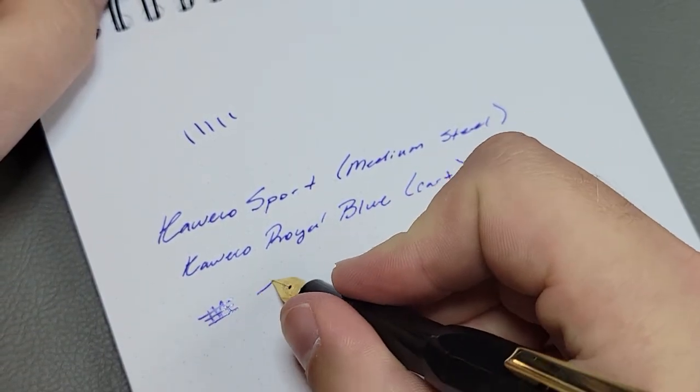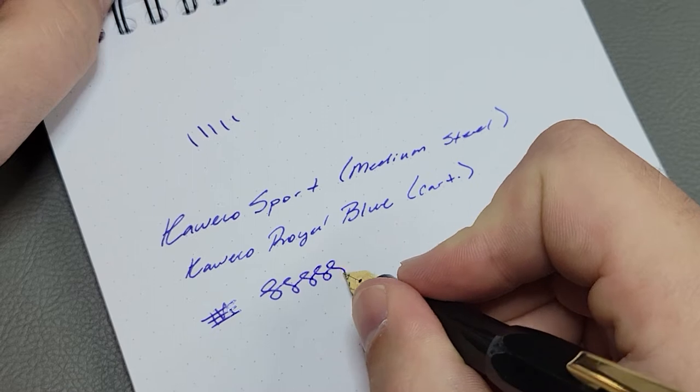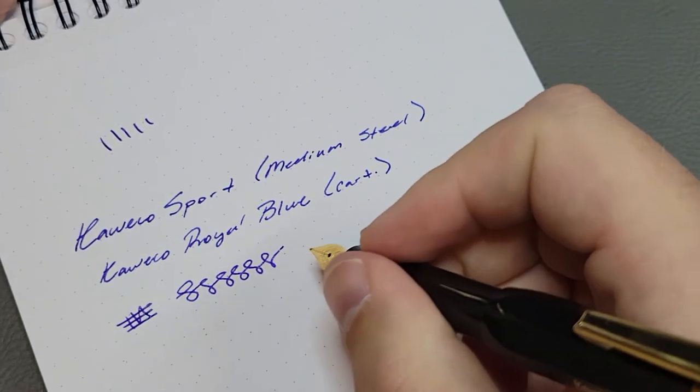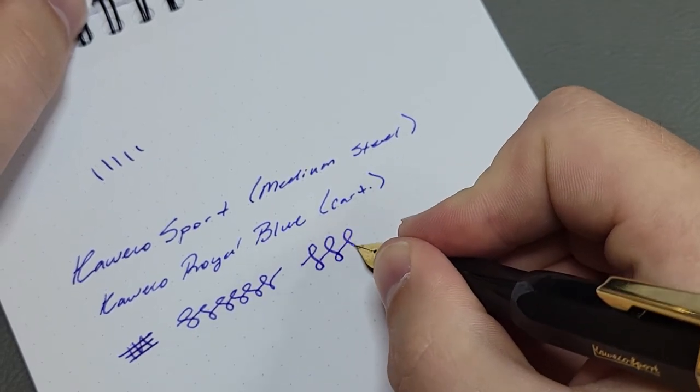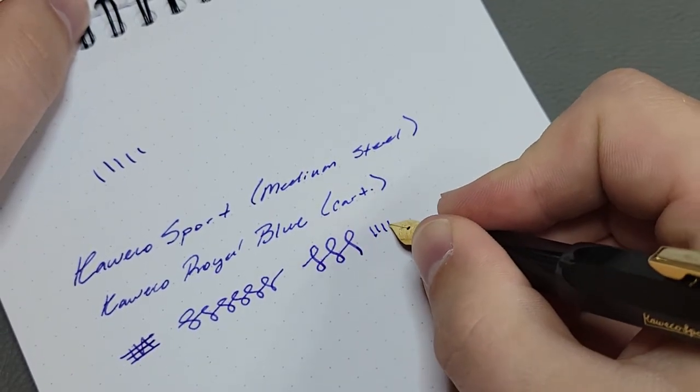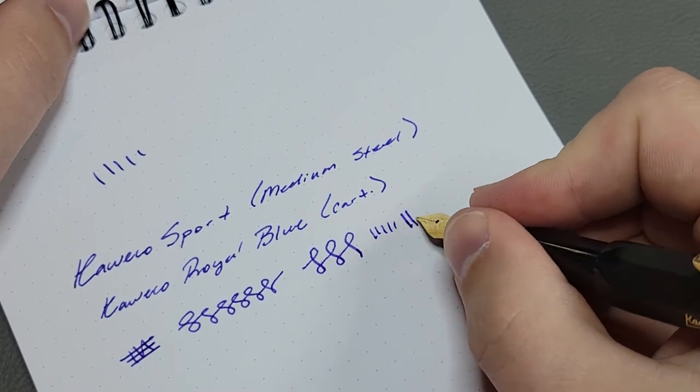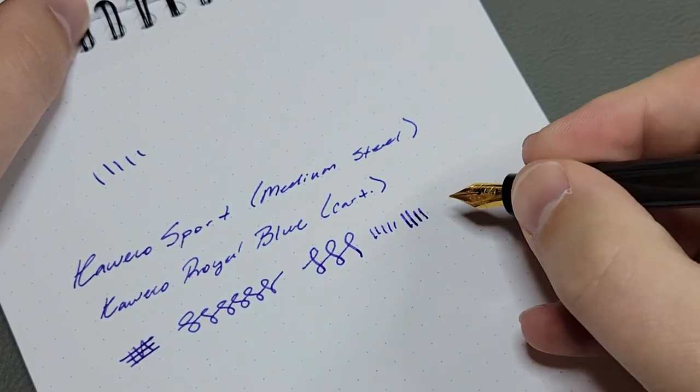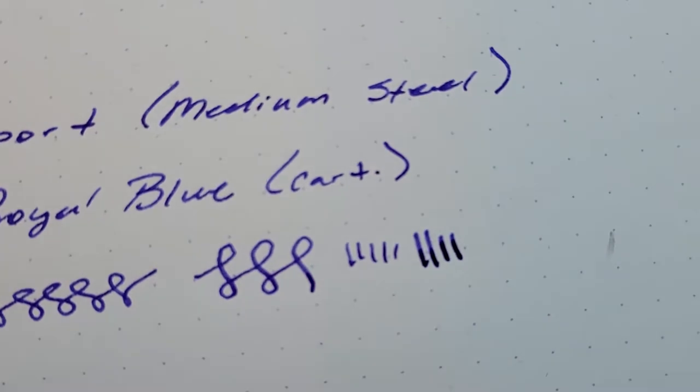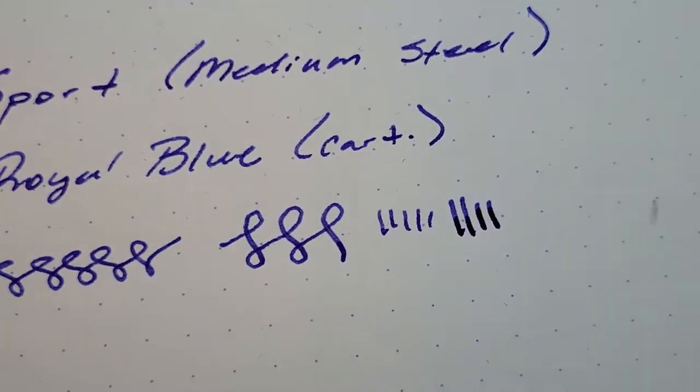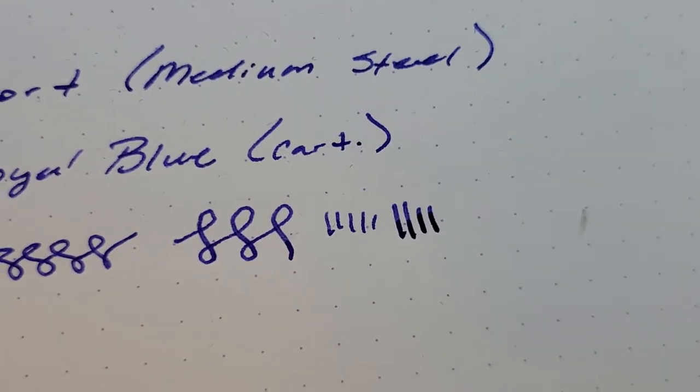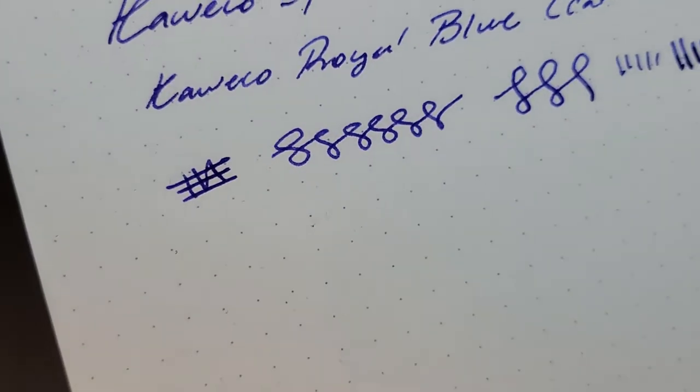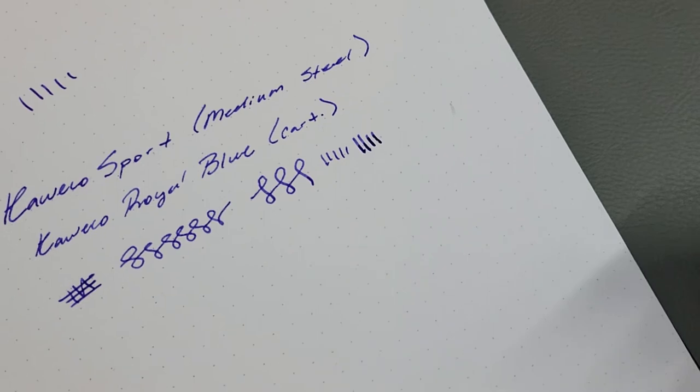We'll get some cross hatches. It's a tiny steel nib so you're not going to have a lot of flex. No, you can't really get, there's sort of no pressure, a little bit of pressure just gives you some more ink but not much in terms of line variation. Maybe a little bit now that I'm looking at it, but I wouldn't do that normally. I would just write at my normal pressure.